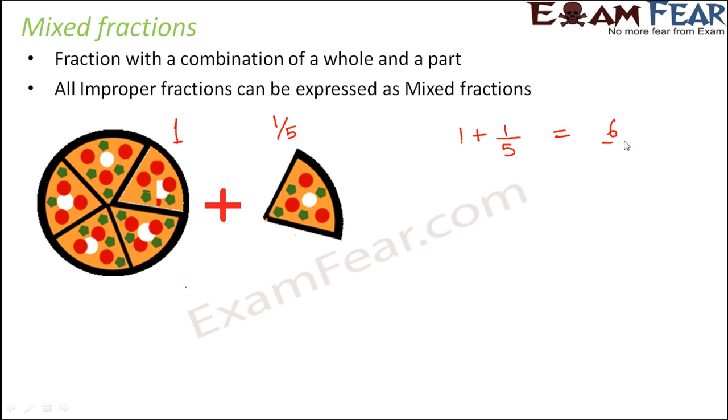When you find out its sum, you get six by five. Six by five is an improper fraction because the numerator is greater than the denominator. Now there is another way of representing the same fraction, and that is one and one by five. One and one by five is equal to six by five. This is an example of a mixed fraction.